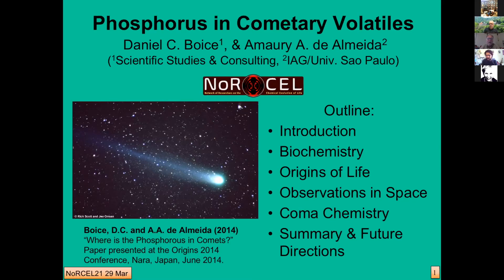This follows up some work we did earlier at an origins conference in Japan. The outline of our talk would be to give a brief introduction and summarize some of the biochemistry and origins of life issues to make sure we're all on the same page — it may be very basic for most of you. Then I'd like to talk about detections of phosphorus in space, get into our work on the chemistry in the coma of a comet, particularly considering the phosphine molecule. Then give a little explanation of future directions in summary.